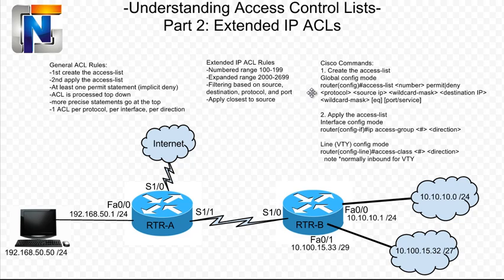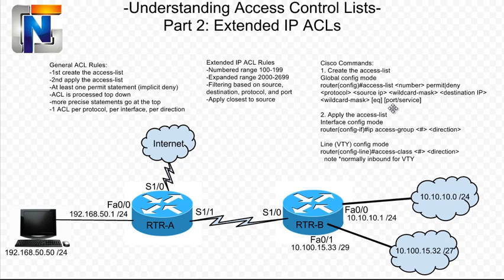In Global Configuration Mode, to create our access list, we will use the access-list command, followed by the number — so we could use 101 — followed by permit or deny, and then the protocol. This protocol can either be IP, or we can break it down into TCP, UDP, or ICMP. After we put the protocol, we need to put the source IP or network, followed by the source wildcard mask. Next, we put the destination IP or network, and the destination wildcard mask. Then optionally at the end, we will put EQ for equals and then the optional port or service. For example, if we wanted to apply the traffic to Telnet, we would type EQ 23, whereas 23 is the port for Telnet. For a lot of these ports, you can also type the actual service name, so for Telnet we could type the word Telnet instead of typing 23.